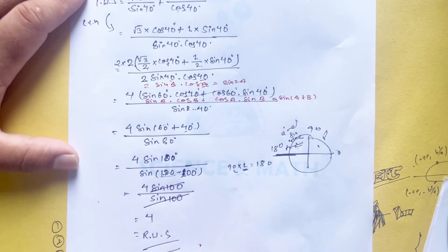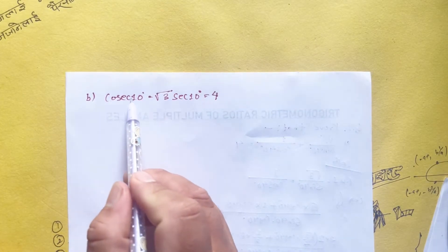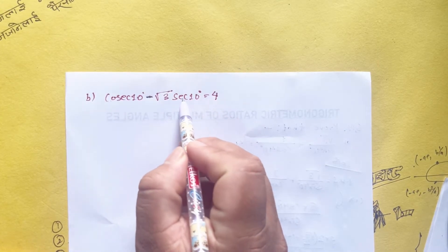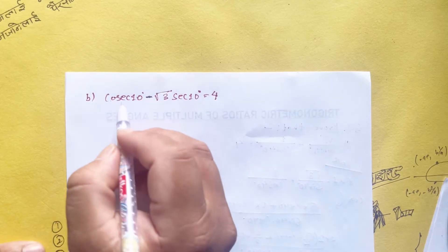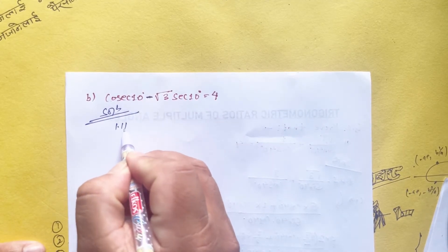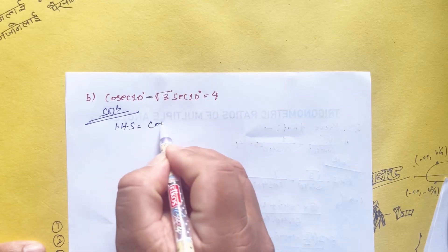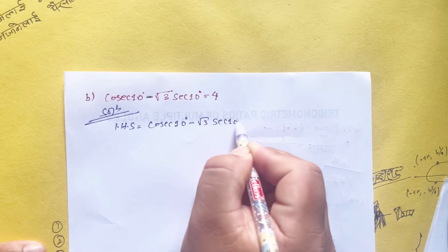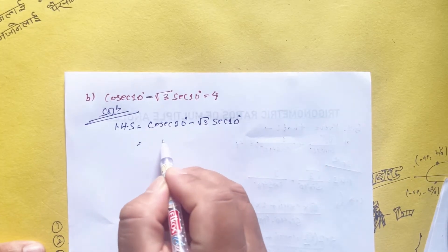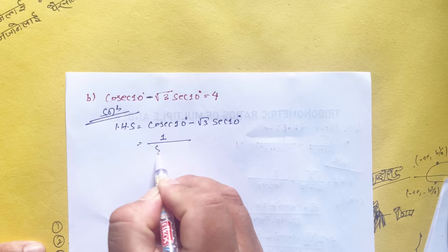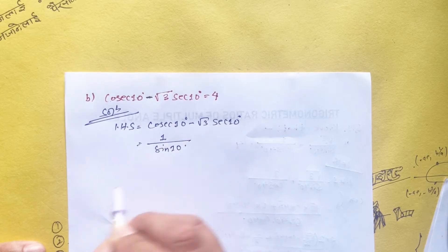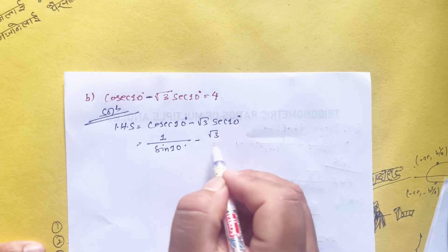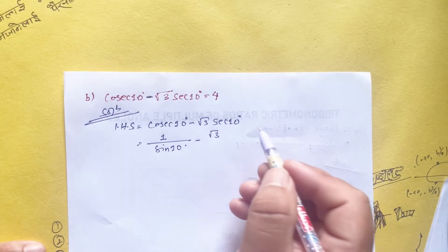That is our RHS, hence proved. Next question: Prove that cosec 10 degree minus √3 sec 10 degree equals to 4. Solution: LHS equals 1 by sin 10 degree minus √3 by cos 10 degree.